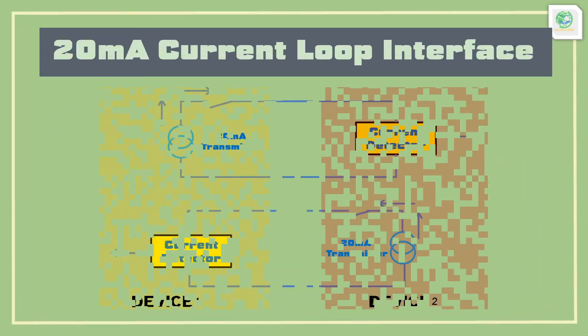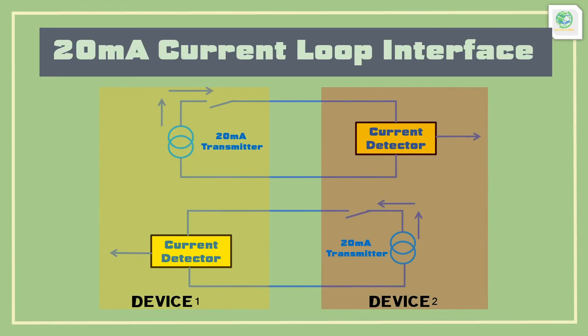A current loop interface is like shown in the figure. Here we can see there are two pairs of wires: one pair for transmission and one pair for reception per device.